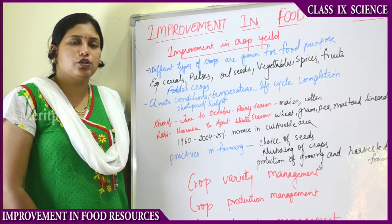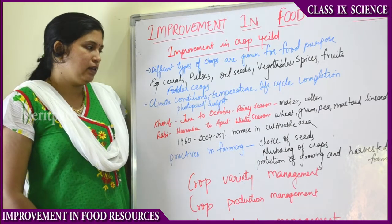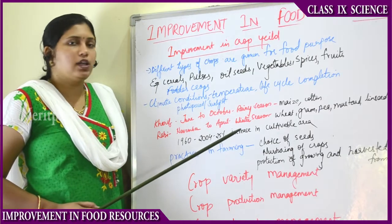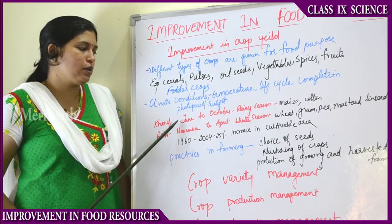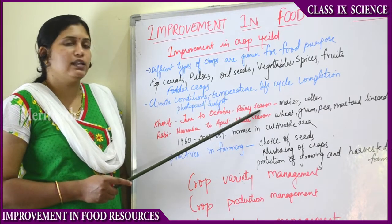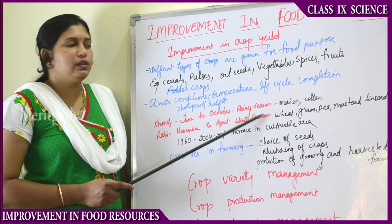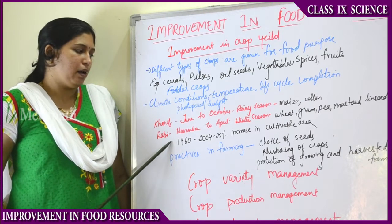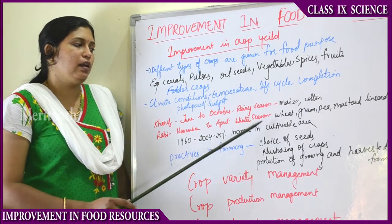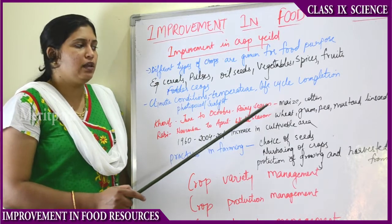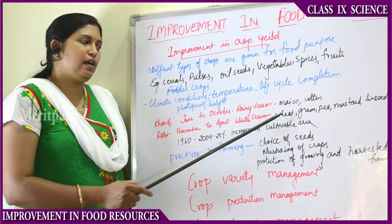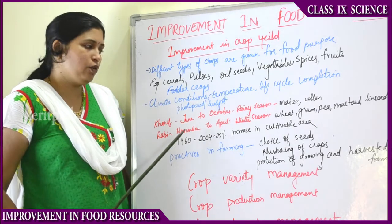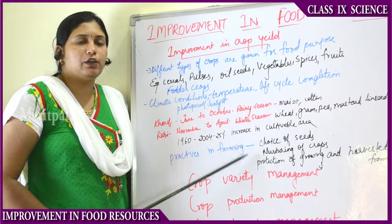Photosynthetic activity is necessary for the production of food for plants. There are mainly two types of crops depending on the time in which they grow. Kharif crops grow from June to October, that is in the rainy season. Rabi crops are winter season crops, and examples grown in the Rabi season are wheat, gram, pea, mustard, and linseed, which is used for oil purpose.